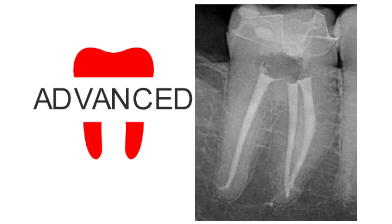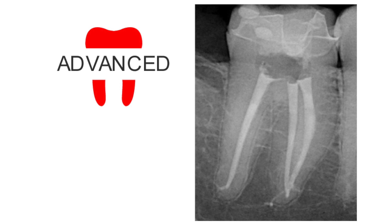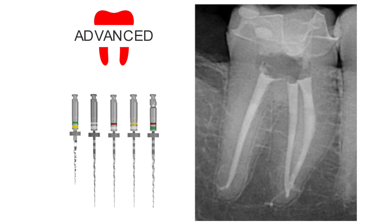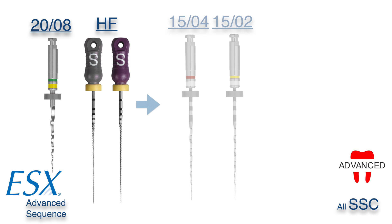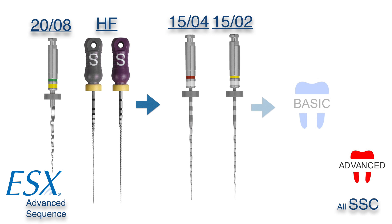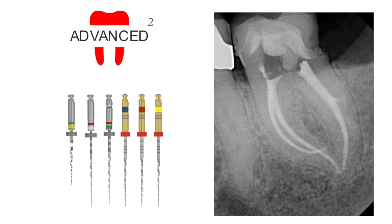But if you have a more advanced canal anatomy, then you're going to need a couple of files in order to turn that advanced canal into a basic canal, from which you could basically complete with two files. And of course, there are the advanced square types of canals that require even more files.